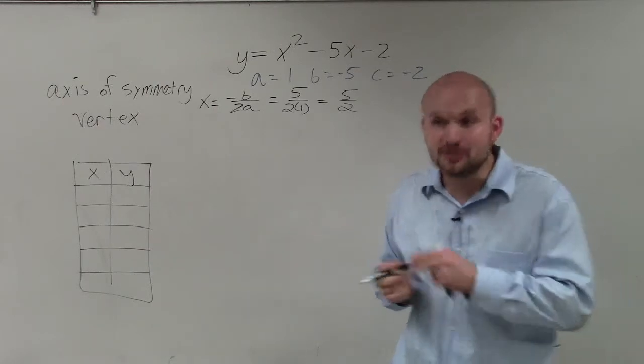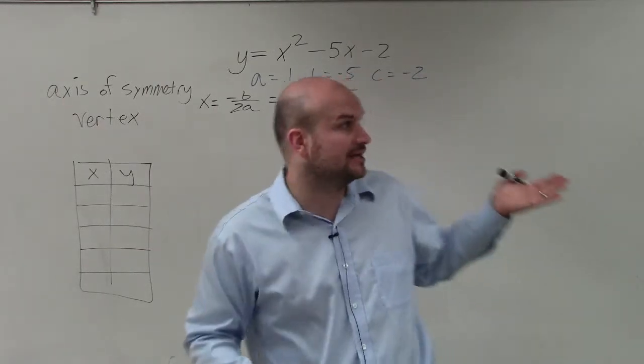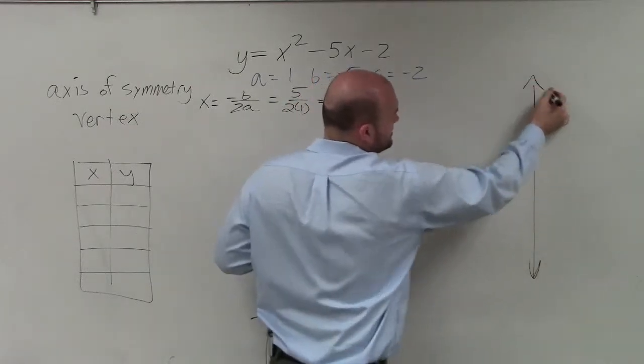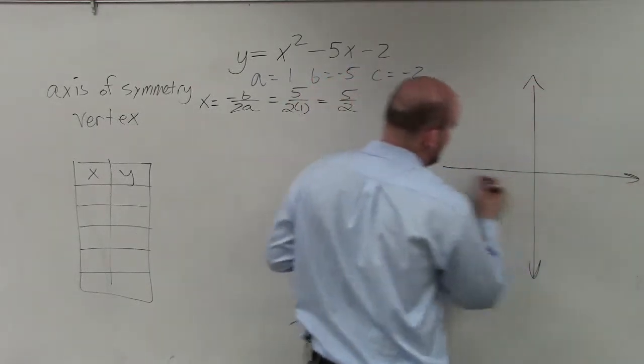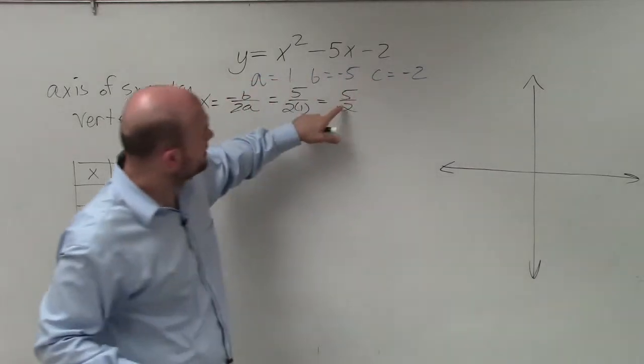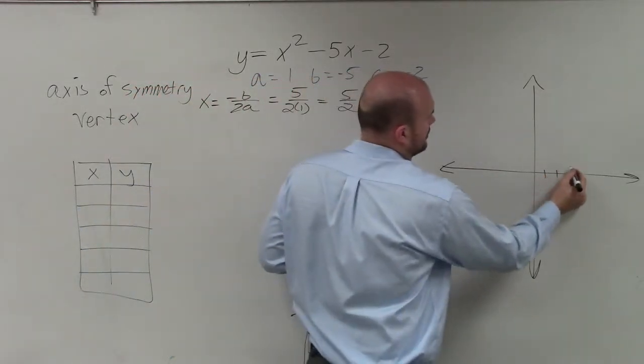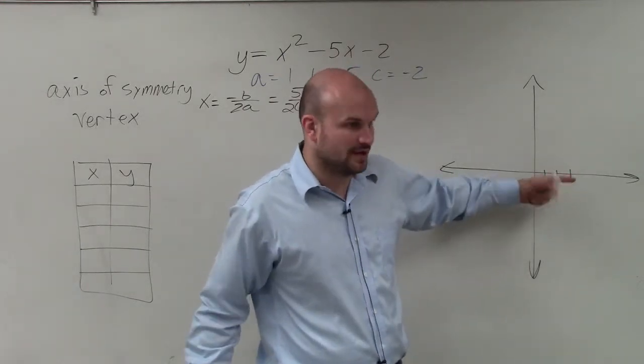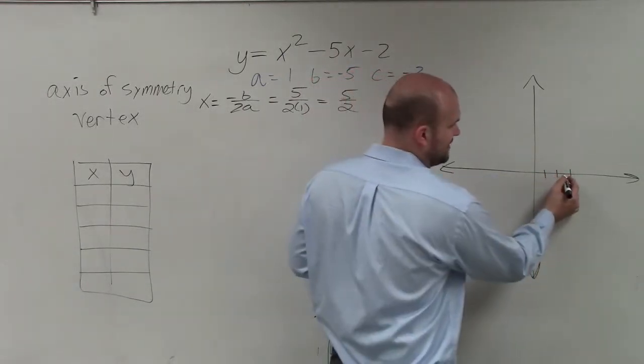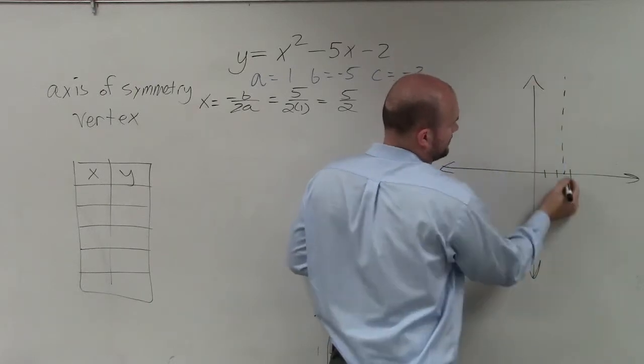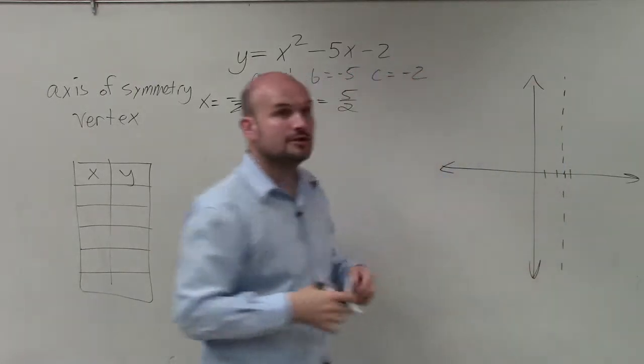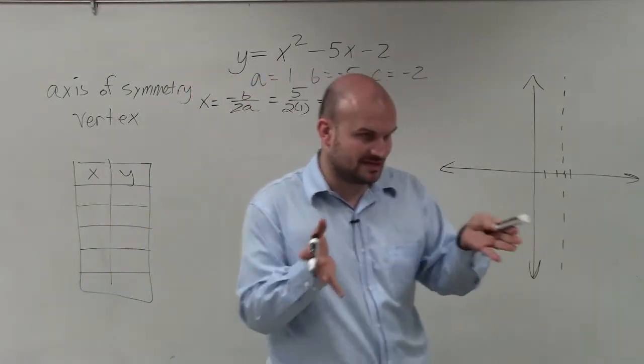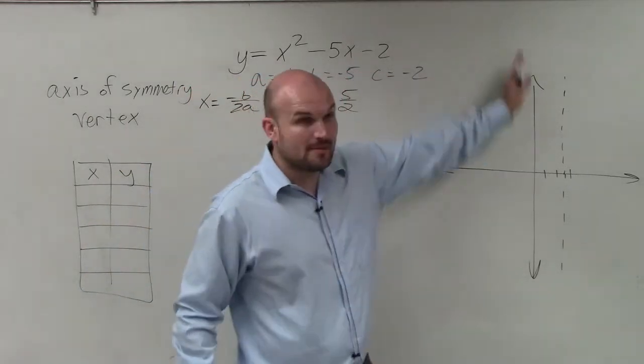Now, we could convert our fraction to a decimal, which would be 2.5. And that's kind of helpful if you guys can visualize that, especially when you're graphing. Because if I'm going to graph this 2.5, I know that 2.5 is roughly going to be in between 2 and 3, right? So we could say 2.5 is right here. Again, you can do it as a mixed number. That's perfectly fine. But I'm going to show you why I'm leaving it as a fraction here in just a second. So I draw my axis of symmetry.